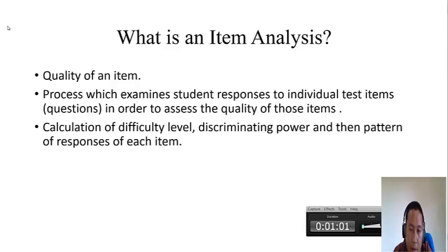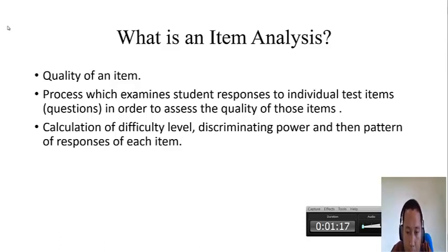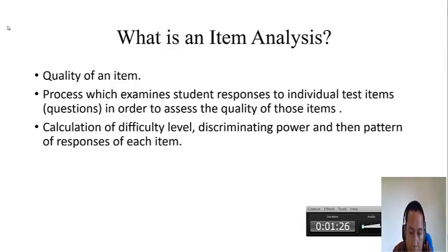As well as the pattern of response for each item. In item analysis, what we are doing is we are calculating difficulty index, discriminating power, and pattern of response. Later we will study what is difficulty index, what is discrimination power, and what is pattern of response. In simple terms, item analysis is a process of checking the quality of an item by calculating difficulty index, discrimination power, and pattern of response.